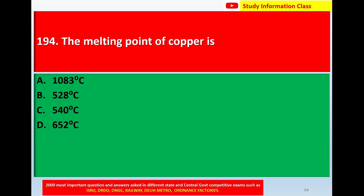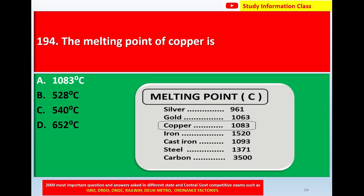The correct answer is option A, 1083 degrees Celsius. Here are some melting points of metals: silver — 961°C, gold — 1063°C, copper — 1083°C, iron — 1520°C, cast iron — 1093°C, steel — 1371°C, carbon — 3500°C.